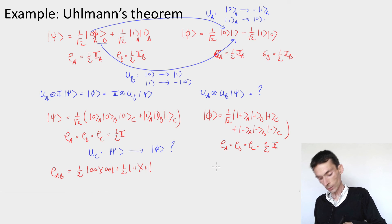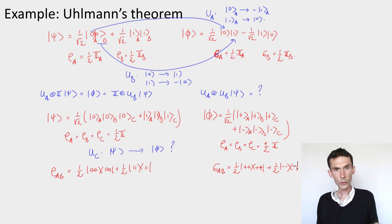And for phi, you get the density matrix sigma AB, which will be equal to half plus plus plus half minus minus.